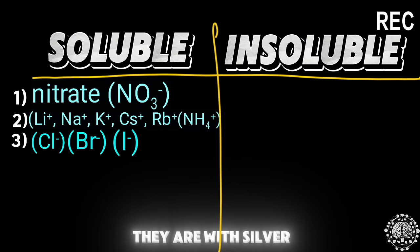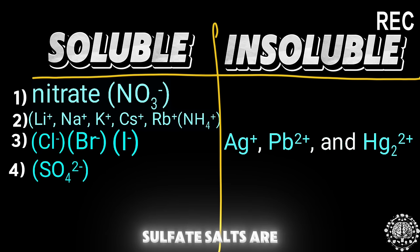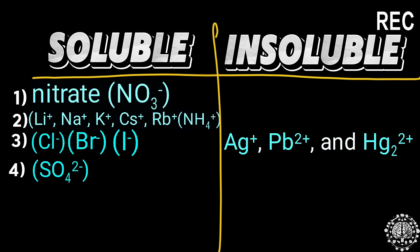Sulfate salts are also soluble except BaSO4, PbSO4, Hg2SO4, and CaSO4.